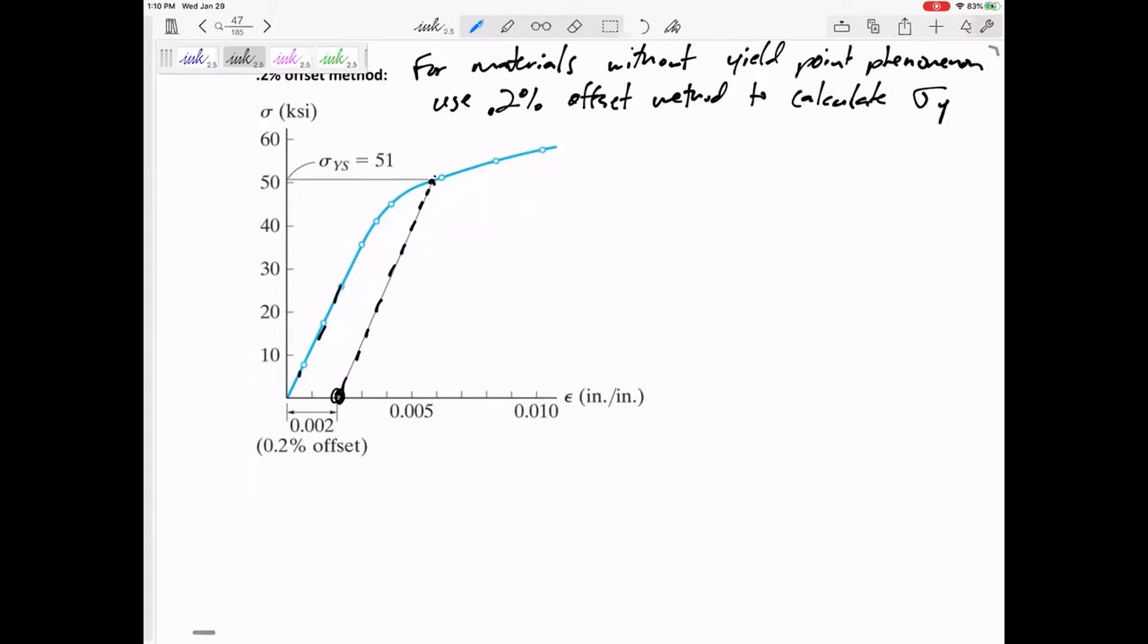So for figures that don't have a sharp yield stress, you need to find the yield stress where after you let go, it has a permanent deformation of 0.002.